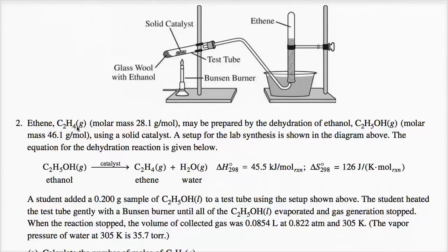Ethene, C2H4, has a molar mass of 28.1 grams per mole. It may be prepared by the dehydration of ethanol, C2H5OH, which has a molar mass of 46.1 grams per mole, using a solid catalyst. The equation for the dehydration reaction shows that ethanol, in the presence of a catalyst, yields ethene and water.